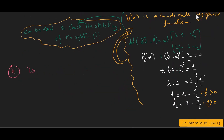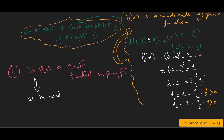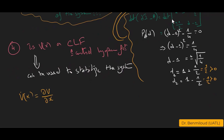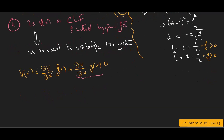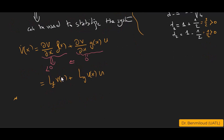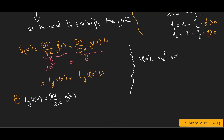The fourth question: is v(x) a CLF, i.e., a control Lyapunov function? V̇(x) = Lf·v(x) + Lg·v(x)·u. v(x) is a CLF if Lg·v(x) = 0 implies Lf·v(x) < 0. The Lie derivative Lf·v = (∂v/∂x)·f(x) and Lg·v = (∂v/∂x)·g(x). Starting from v(x) = x₁² - x₁x₂ + x₂², we have ∂v/∂x₁ = 2x₁ - x₂ and ∂v/∂x₂ = 2x₂ - x₁.